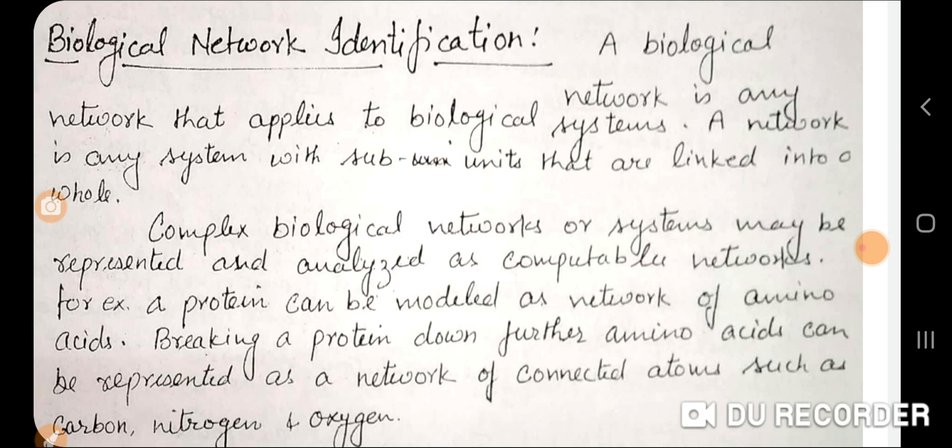A biological network is any network that applies to a biological system. A network is just connections — how you can apply connections to a biological network is what you have to understand. A network is any system with sub-units that are linked into a whole.